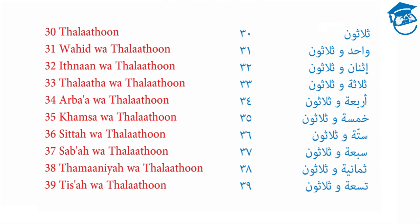32 is Ithnan Wa Thalathun. 33 is Thalatha Wa Thalathun. 34 is Arba Wa Thalathun. 35 is Khamsa Wa Thalathun. 36 is Sittah Wa Thalathun. 37 is Seba Wa Thalathun. 38 is Thamanya Wa Thalathun. And 39 is Tisah Wa Thalathun.